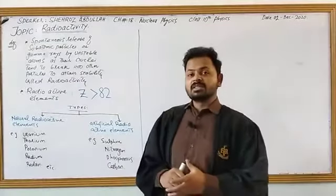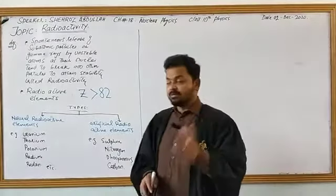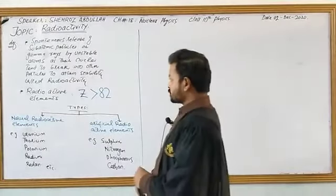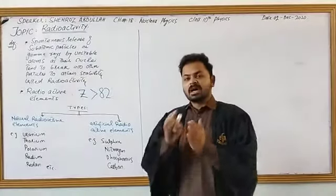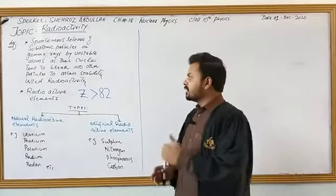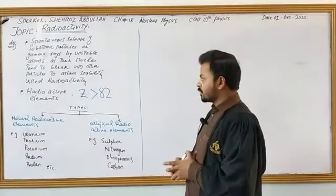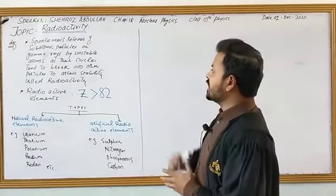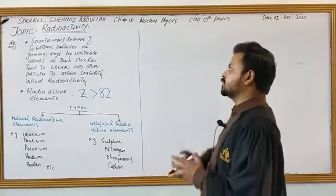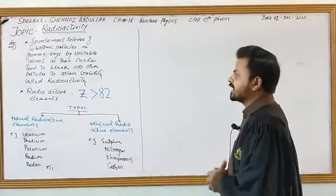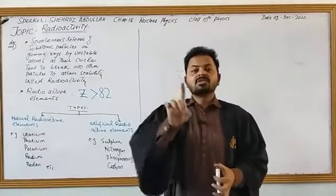Subatomic particles include electron, proton, and neutron. Gamma rays are in the form of energy. Spontaneous release of subatomic particles or gamma rays by unstable elements causes them to form new nuclei and attain stability — this phenomenon is called radioactivity.